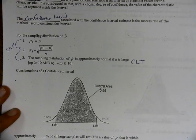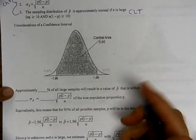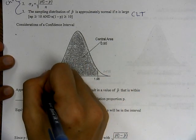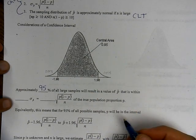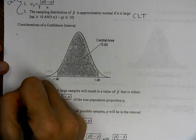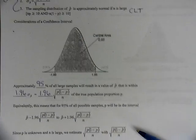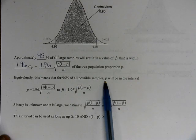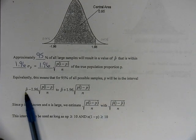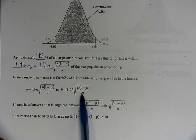What we look for in a confidence interval is the percent of all samples that would be within a range. If we're looking at 95%, approximately 95% of all large samples will result in a p-hat that is within 1.96 standard deviations. So 95% of all possible samples will have the true population proportion in the interval of p-hat minus 1.96 times the standard deviation to p-hat plus 1.96 times the standard deviation.